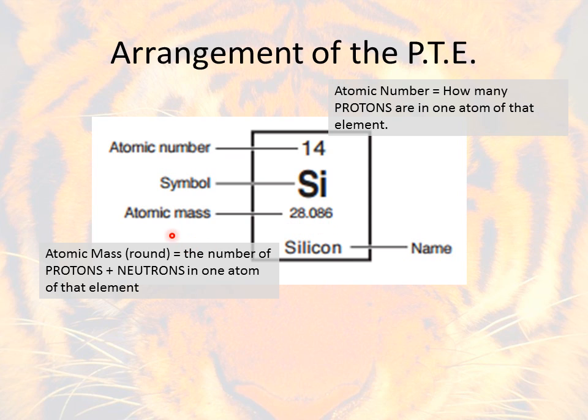And if we think back to the last slide, anything that has mass is quite simply just the protons and the neutrons. We already said the electrons are too small. We're not going to worry about them. So if we add up all the protons and we add up all the neutrons in one atom of silicon, we would get 28. And that's exactly what we see here.